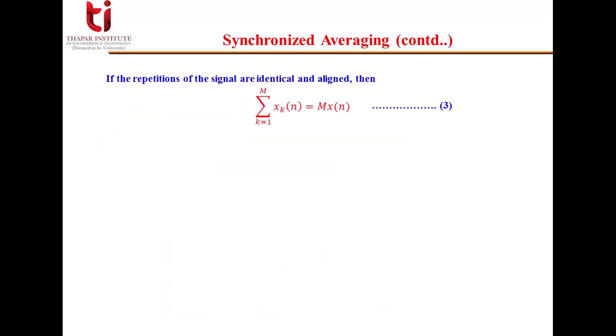Now let's suppose if the repetitions of signal are identical and aligned, then it makes summation of xk(n), k equal to 1 to M, will be nothing but M times x(n). This is in particular if we have mentioned it should be properly aligned. Then you can say that this is M into x(n).